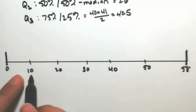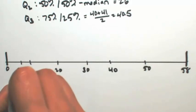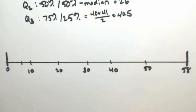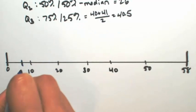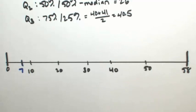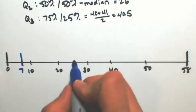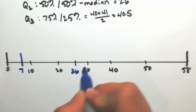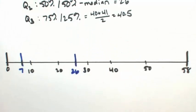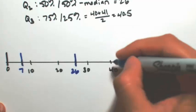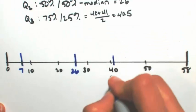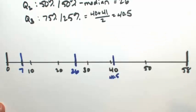If Q1 is at 7, I'm going to mark out where 7 is. We need a different color actually. Okay, 26 is Q2. And then 40.5 is Q3.